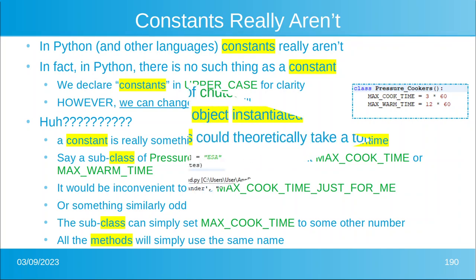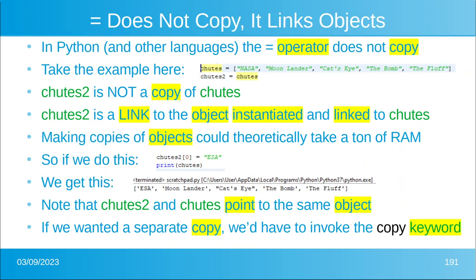Now the next important concept: the equal sign does not make a copy of an object — it links objects. In Python and other languages, the equals operator does not make a copy. So if we take that example and we say shoots equals and we make that list, and then shoots2 equals shoots, shoots2 is not a copy of shoots — shoots2 is a link to the object that is linked by shoots. So why do we do this? Because making copies of objects could theoretically take a ton of RAM, a ton of space, and a ton of time, and we don't normally want to do it. So if we do this example on the screen, shoots2[0] equals ESA, and then we print shoots...